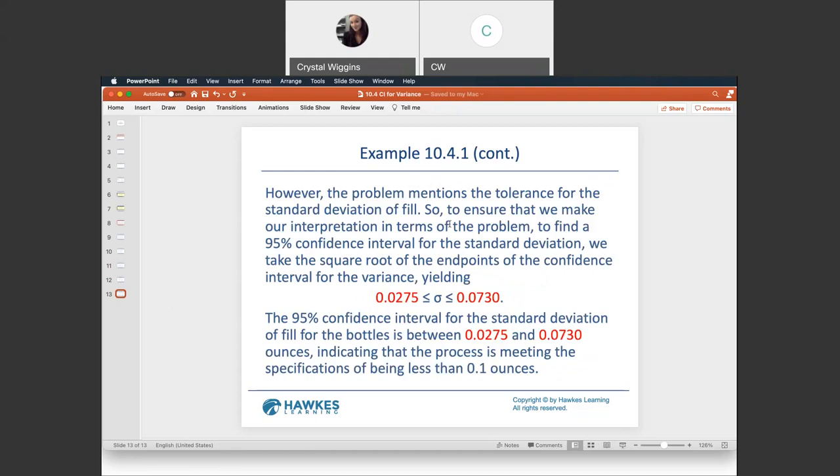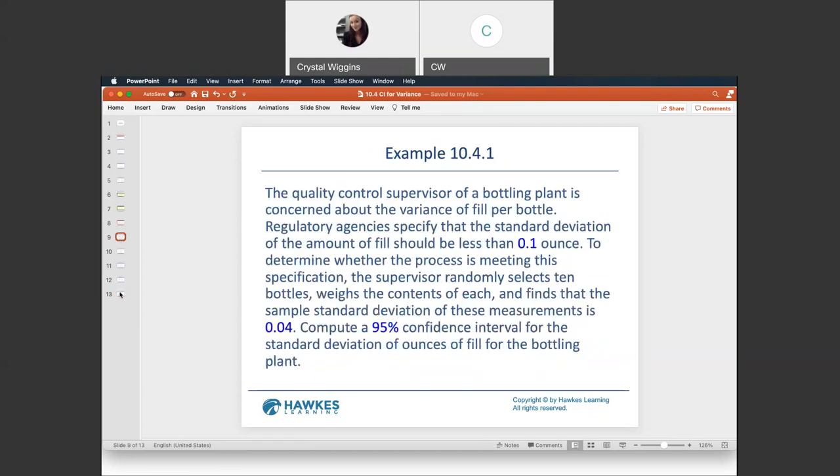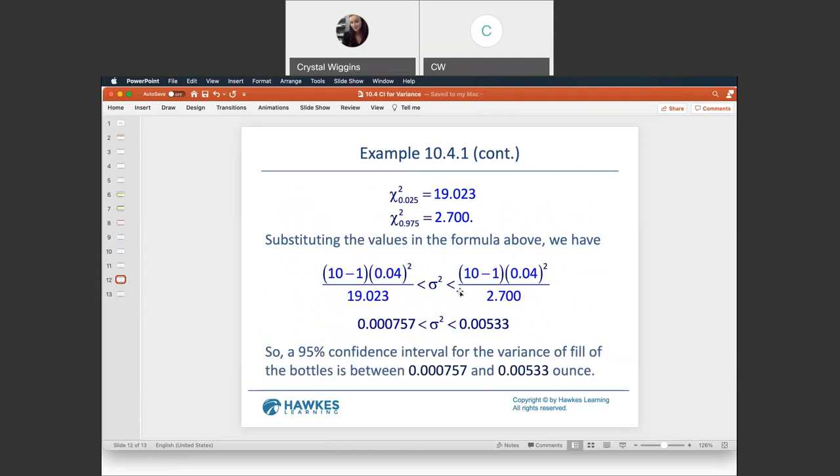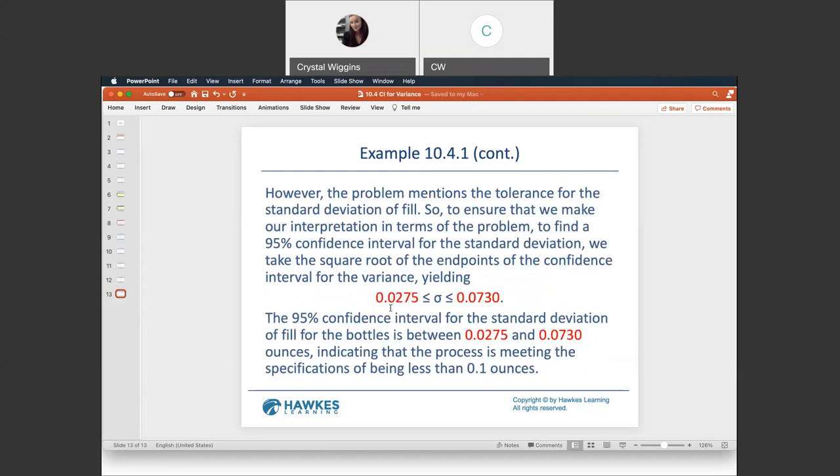However, the problem mentions the tolerance for the standard deviation of fill. To ensure that we make our interpretation in terms of the problem, to find a 95% confidence for the standard deviation, we take the square root of the endpoints. Because we need to make sure that the standard deviation is within 0.1, and it was referencing standard deviation, and we calculated an interval for variance. We take the square root of both sides, giving us 0.0275 and 0.0730. The 95% confidence interval for the standard deviation of fill for bottles is between 0.02 and 0.07 ounces, indicating that the process is meeting the specifications of being less than 0.1, since both these numbers are less than 0.1. And that is how you do a confidence interval for variance using the chi-square distribution.